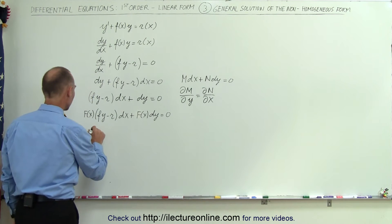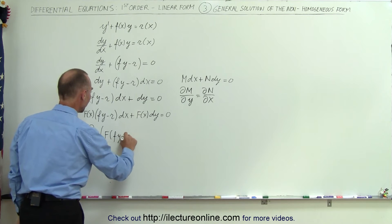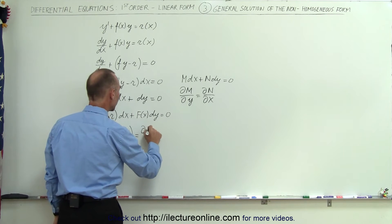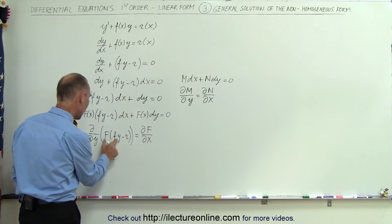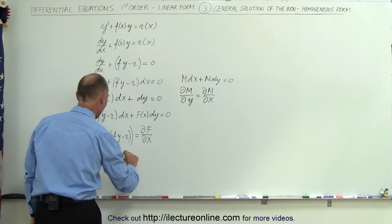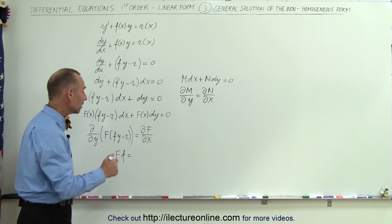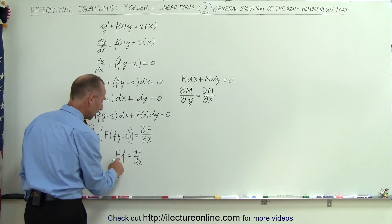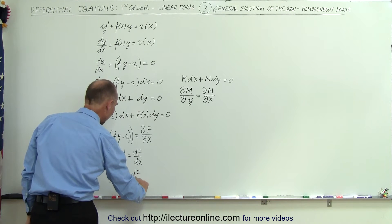We take the partial with respect to y of φ times (f·y minus r), and set that equal to the partial of the integrating factor φ with respect to x. On the left side, taking the partial with respect to y simply gives φ times f, and the partial of the second term gives 0. So this becomes φ·f equals the derivative of φ with respect to x. Since φ is only a function of x, rearranging gives f times dx equals dφ divided by φ.